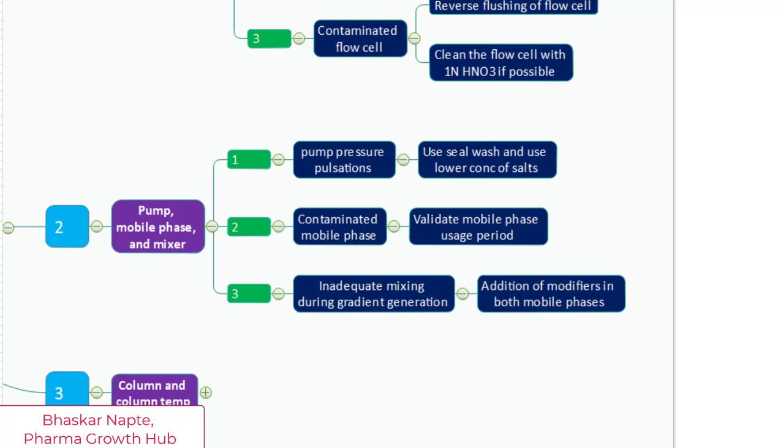So use TFA in acetonitrile at about 80 to 85% of the amount used in water. Insufficient mixing can also create a big problem when there is a significant imbalance in the UV absorbance of the mobile phase components.